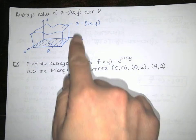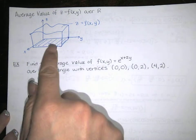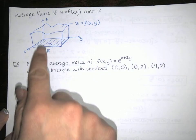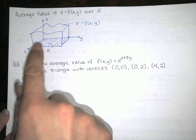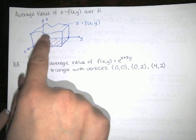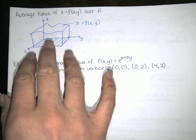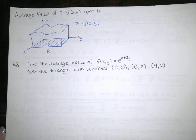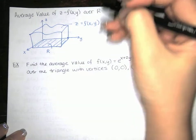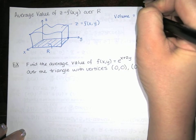Let's say you've got a function f of xy equals z, and you're integrating it over the region R. Then we would find the volume under the surface, or the volume between this surface and the region R in the xy plane. I just happened to draw the region R as a rectangular region, but it wouldn't necessarily have to be a rectangular region.